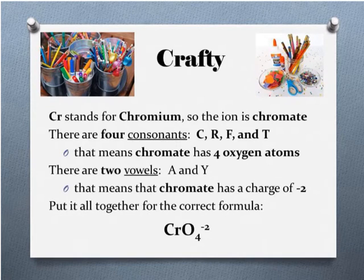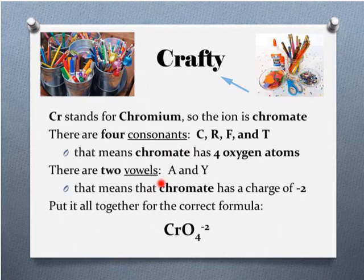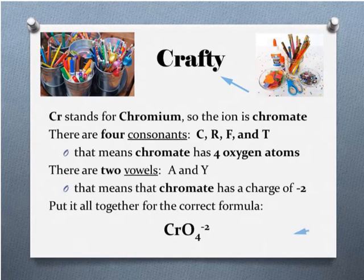The next word in our saying is crafty. The Cr stands for chromium, so our polyatomic ion is the chromate ion. There are four consonants — C, R, F, and T — and that translates to four oxygen atoms. There are two vowels, A and Y, which means the chromate ion has a charge of negative two. The correct formula for the chromate ion is CrO4²⁻.